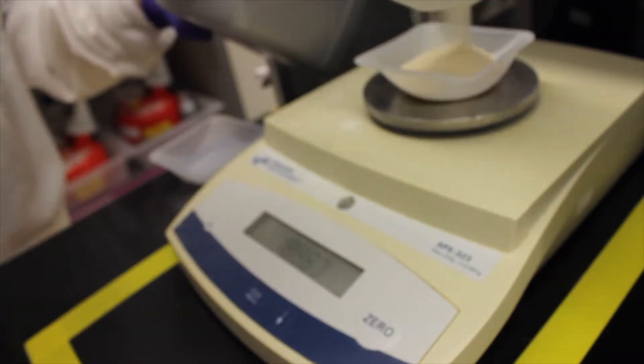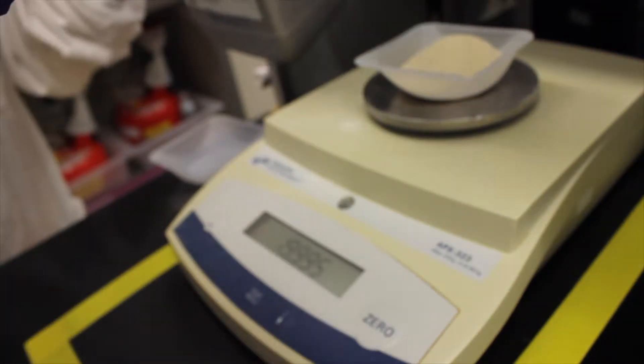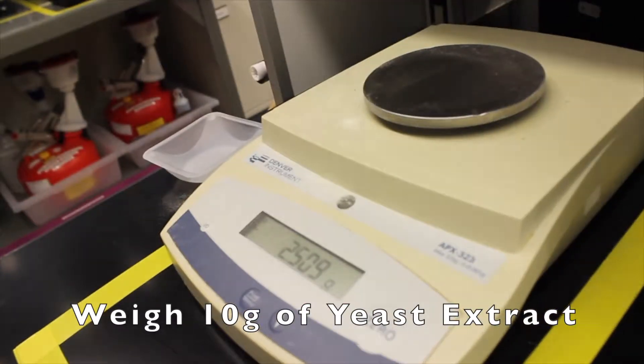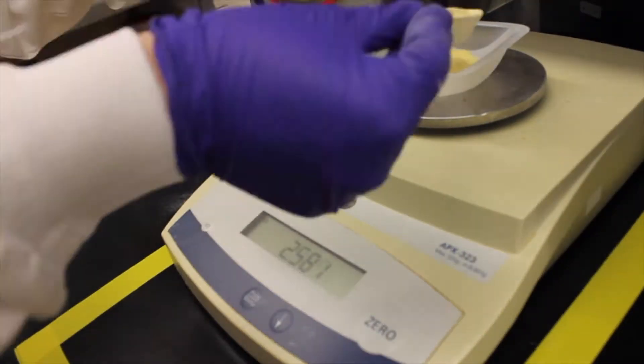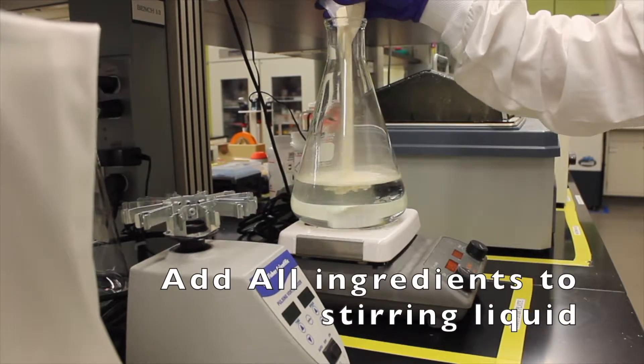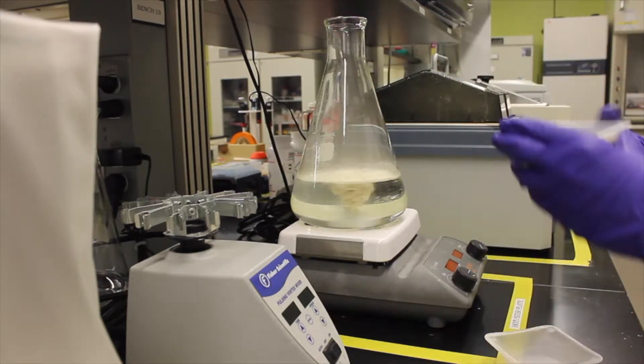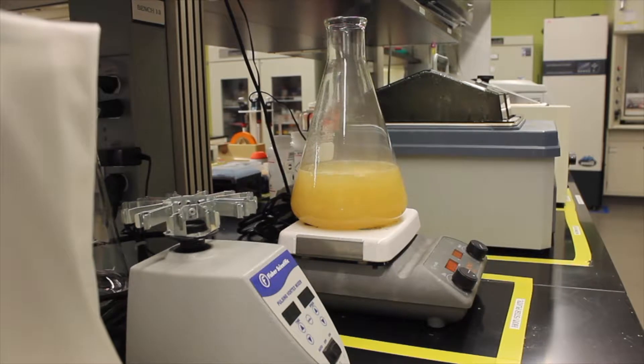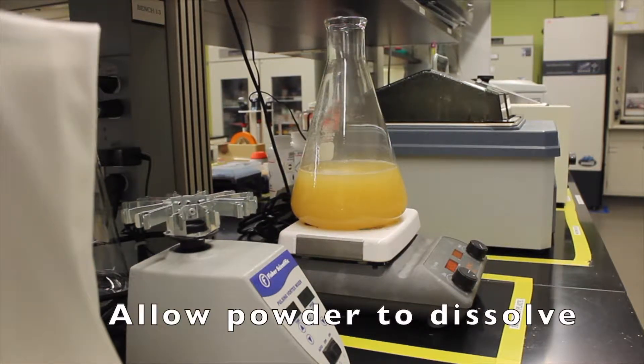Omit the agar if you're doing liquid media as this will make it solid. Next, we're going to weigh out 10 grams of yeast extract and then add all the ingredients to the flask while the stir bar is stirring. Feel free to turn up the stir bar so that all the powder dissolves.